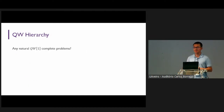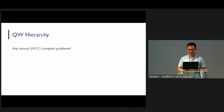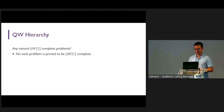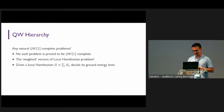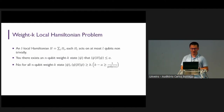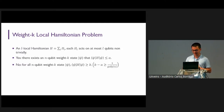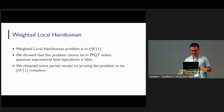After defining all these problems, we would like to ask: are there any natural QW[1]-complete problems? It might seem very artificial, just a generalization of classical results. Unfortunately, there is no problem that we proved to be QW[1]-complete. However, since the weighted 3-SAT problem is W[1]-complete, we consider a weighted version of the local Hamiltonian problem, which can be seen as a quantum generalization of the 3-SAT problem. That is, given a local Hamiltonian problem, we want to decide the ground energy level, but we are only considering the weight-k subspace of quantum states.